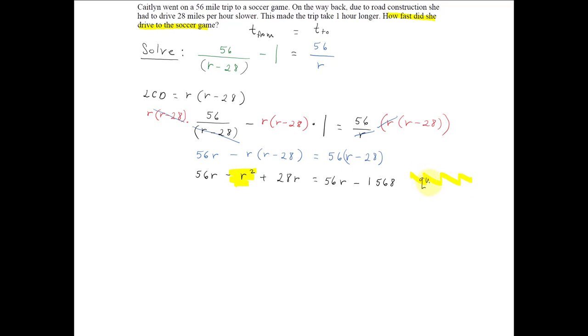And in order to solve a quadratic equation, we need to get zero on one side. So let's do that. Let's move everything over to the right side. So I'm going to go ahead and easily combine like terms on this left side first. We get 56r plus 28r is equal to 84r, equal to 56r minus 1568.